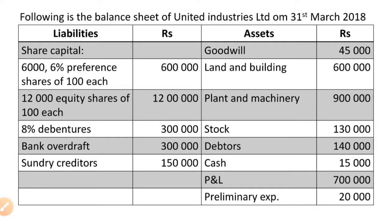On the asset side: goodwill Rs.45,000; land and building Rs.6 lakh; plant and machinery Rs.9 lakh; stock Rs.1,30,000; debtors Rs.1,40,000; cash Rs.15,000; P&L Rs.7 lakh; preliminary expenses Rs.20,000. This is the question and this is the balance sheet.